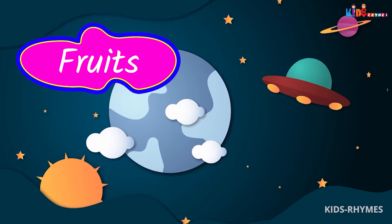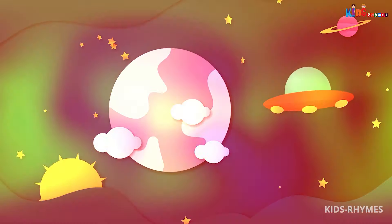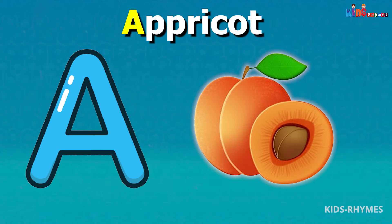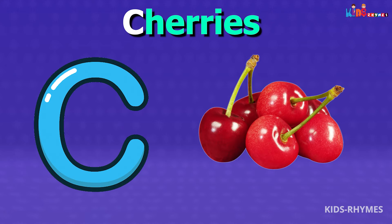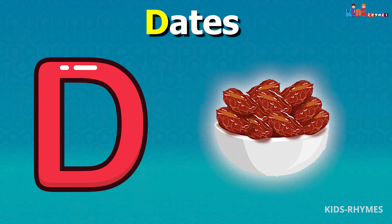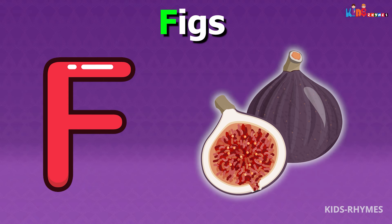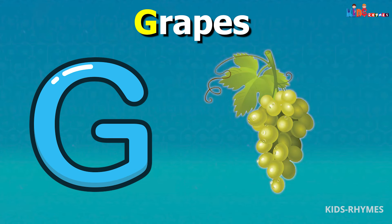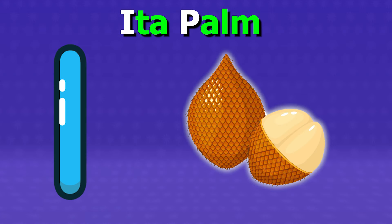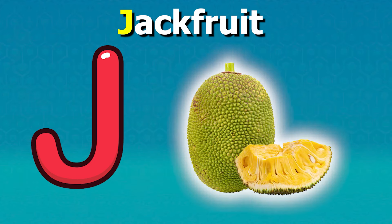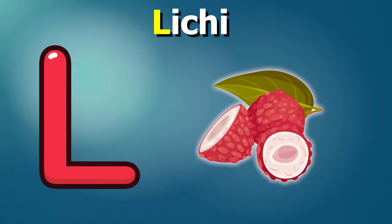Fruits name according to alphabets. A for apricots, B for bananas, C for cherries, D for dates, E for elderberries, F for figs, G for grapes, H for honeydew, I for ita palm, J for jackfruit, K for kiwis, L for lychees.